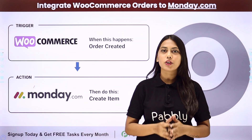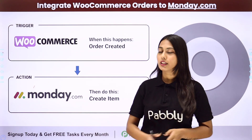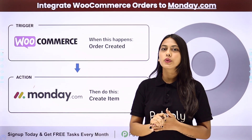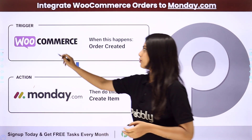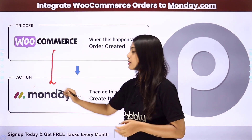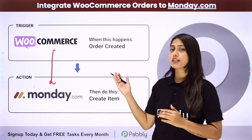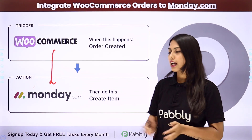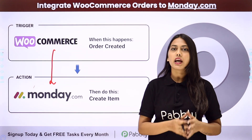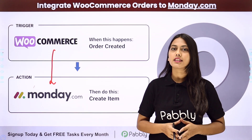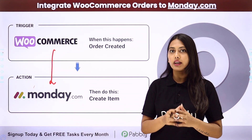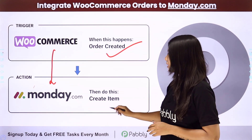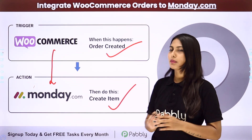Hello everyone. In this video we are going to learn how to integrate WooCommerce orders to Monday.com. We are going to integrate both of these applications so that whenever an order is created in WooCommerce, Monday.com's groups or tables will be updated and a new item will be created. We are going to create this integration with the help of Pably Connect, where our trigger will be the order created in WooCommerce and our action will be to create an item in Monday.com.